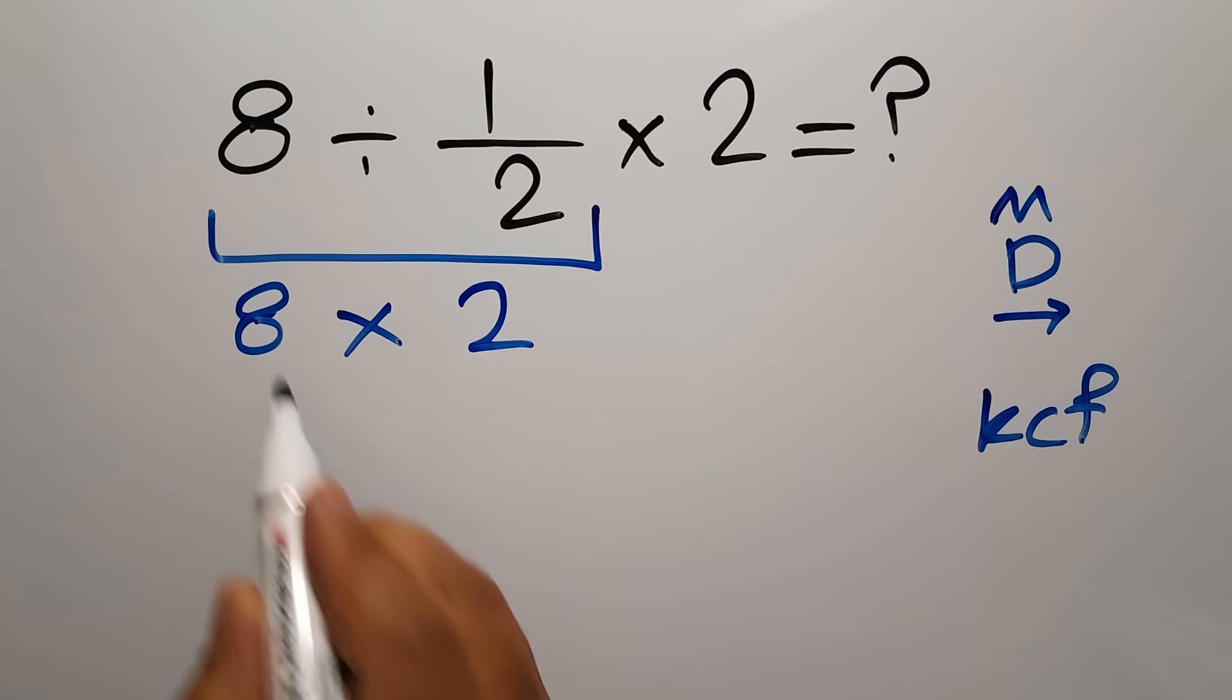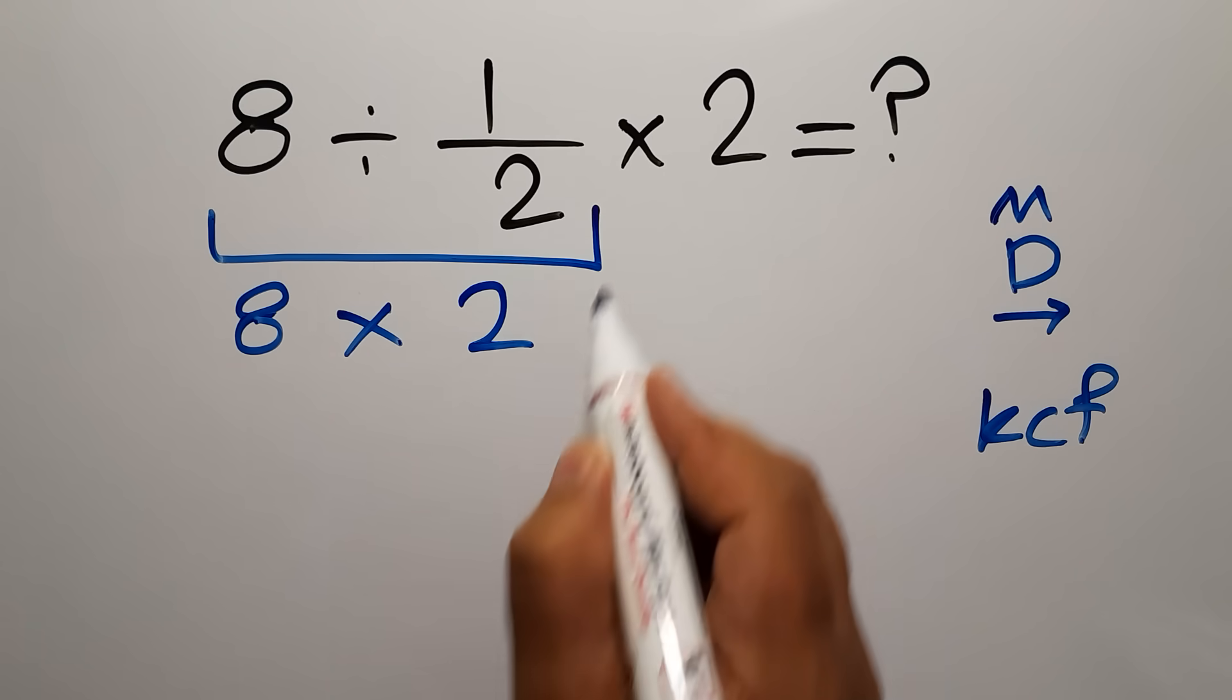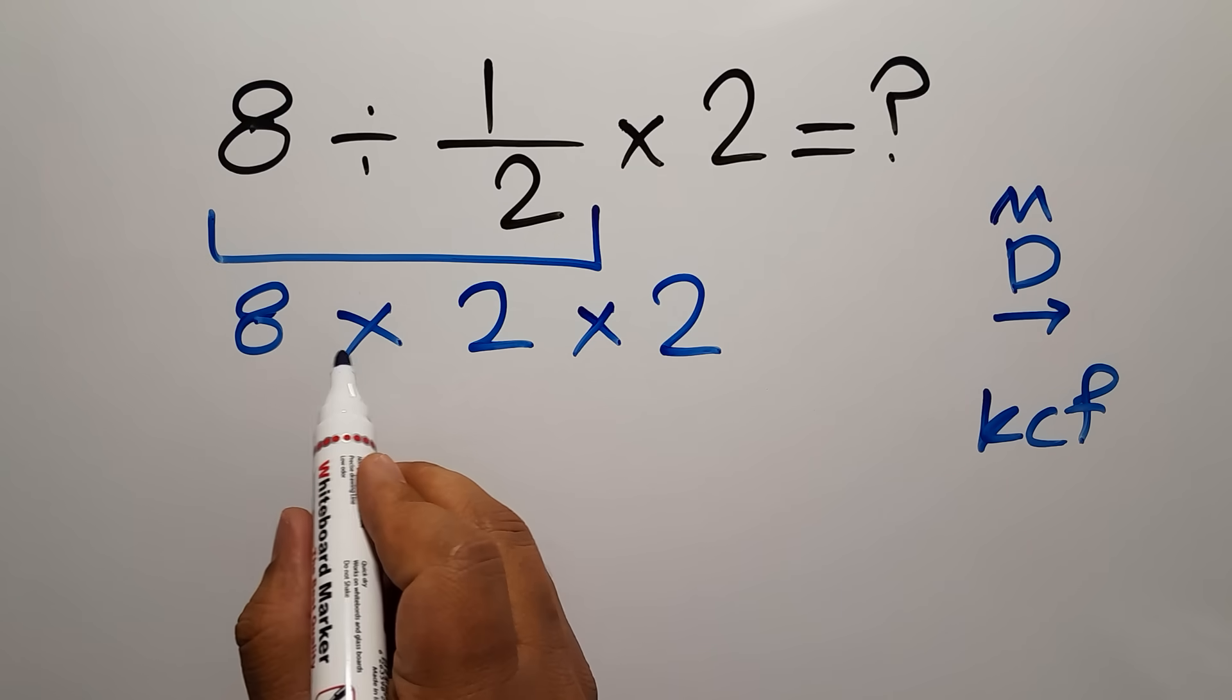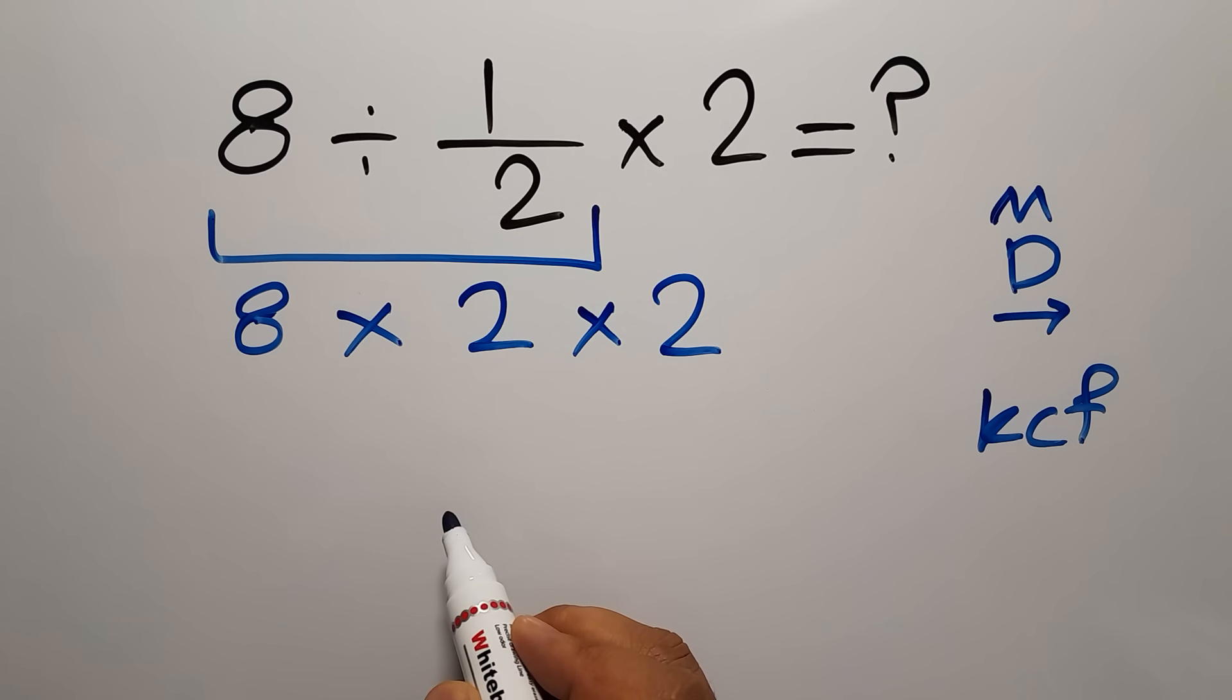We can write 8 times 2 over 1, which equals 2. So 8 times 2, and again we have here times 2.